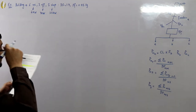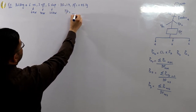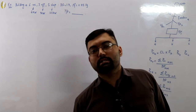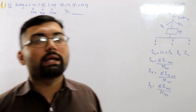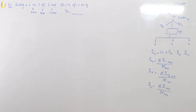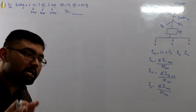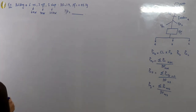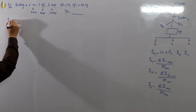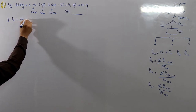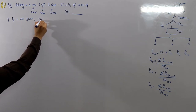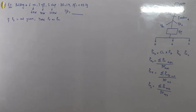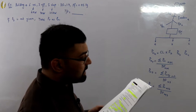Determine the rating of the transformer required. For the transformer requirement, we need to know the maximum demand. We are given the connected load. When the demand factor is not given or not mentioned, take the connected load equal to the maximum demand — that is, take PT as equal to PM.